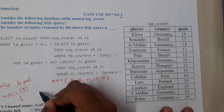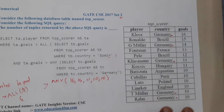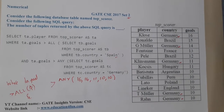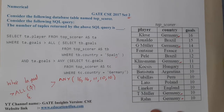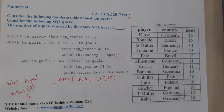And tb.goals greater than ANY: if there is any one value greater than this we take it. To be clear, it should be strictly greater than the value.